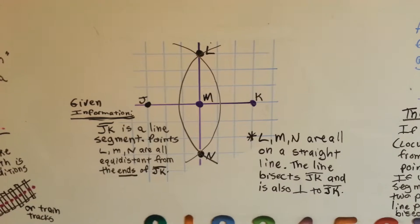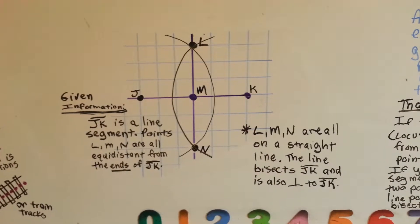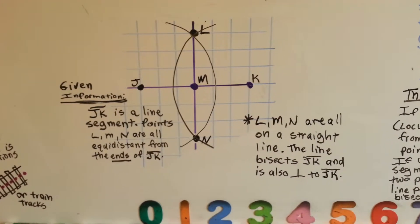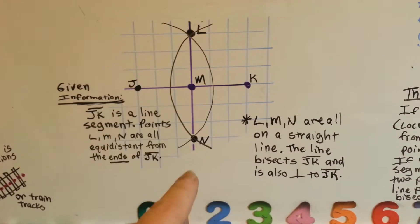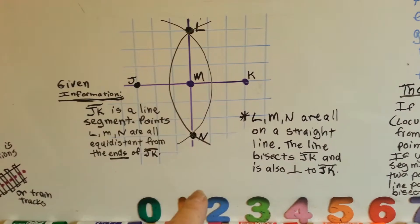Describing the shape or figure and the conditions using descriptive full sentences, I've got L, M, N are all on a straight line, the line bisects JK, and is also perpendicular to JK.